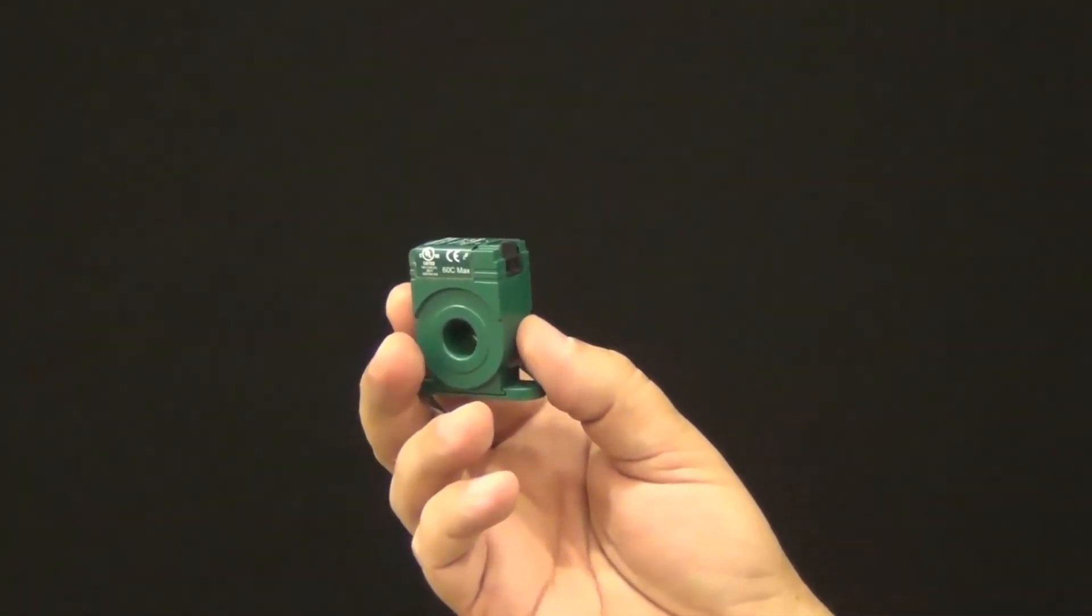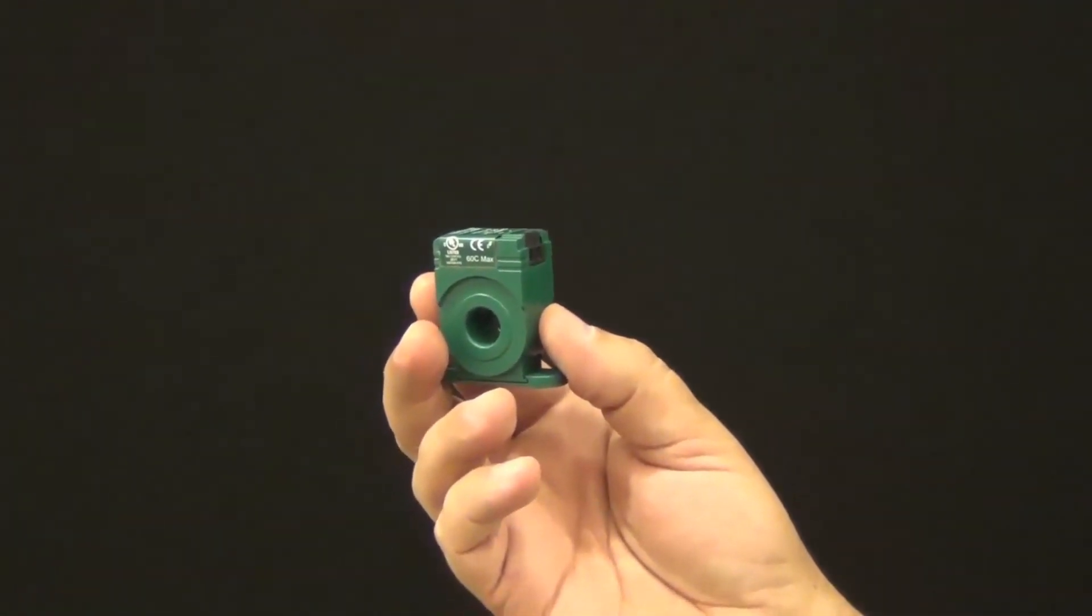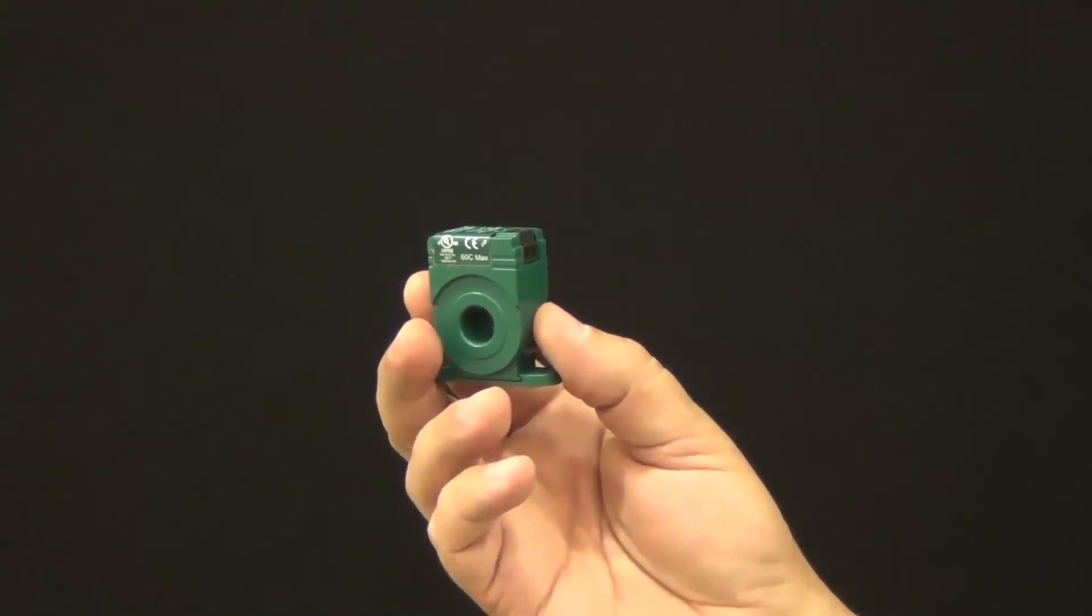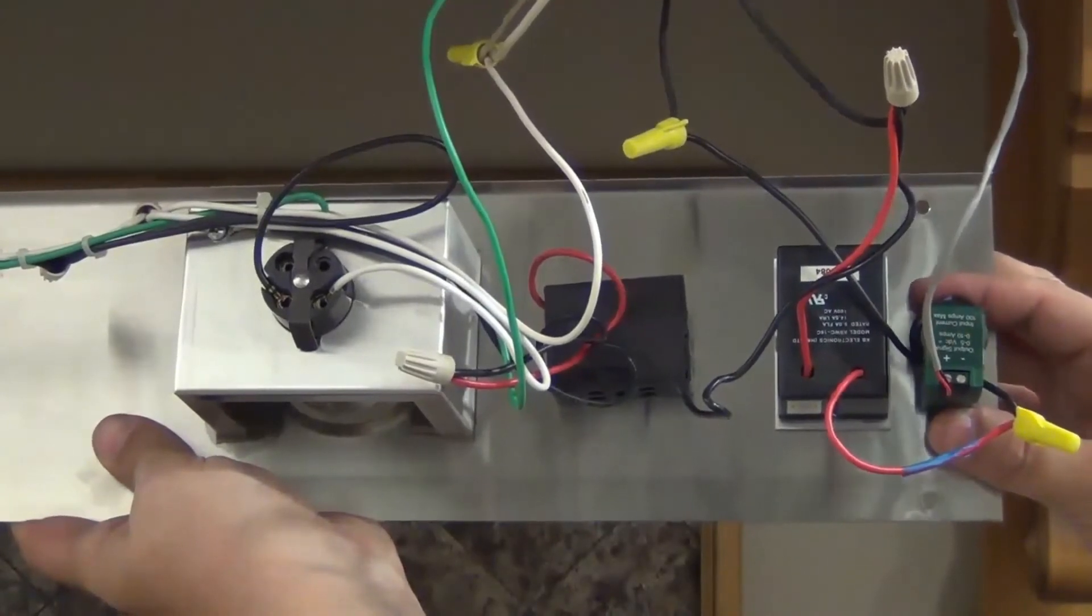For the purposes of demonstration and explanation, here we show the mounting of the included current transducer on the electrical plate of a range hood liner.